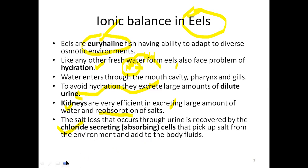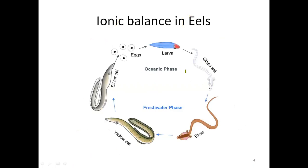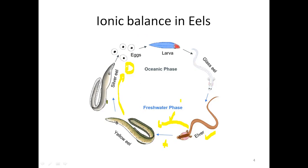This picture shows the migration of eels. In freshwater the eel develops and becomes adult, then the adult migrates to the ocean for breeding purposes. They lay eggs and the larva develops into an elver. When the elver starts swimming towards freshwater, that is where the challenge of osmoregulation begins. Similarly, when the adult is moving towards the sea, there again comes the challenge of osmoregulation.